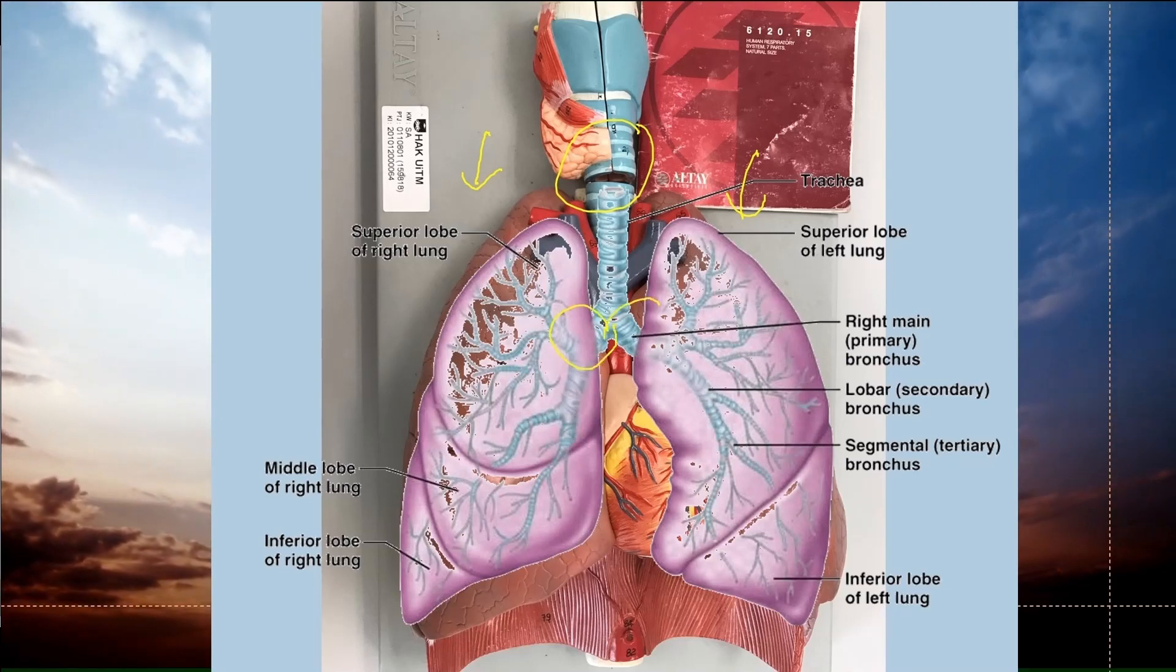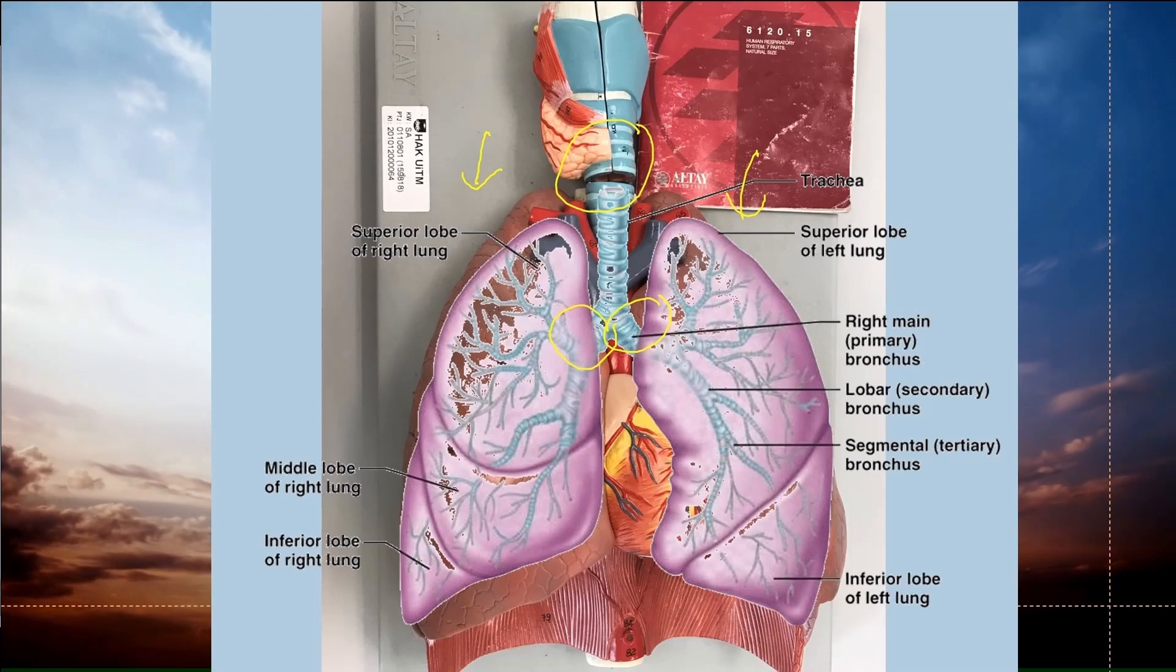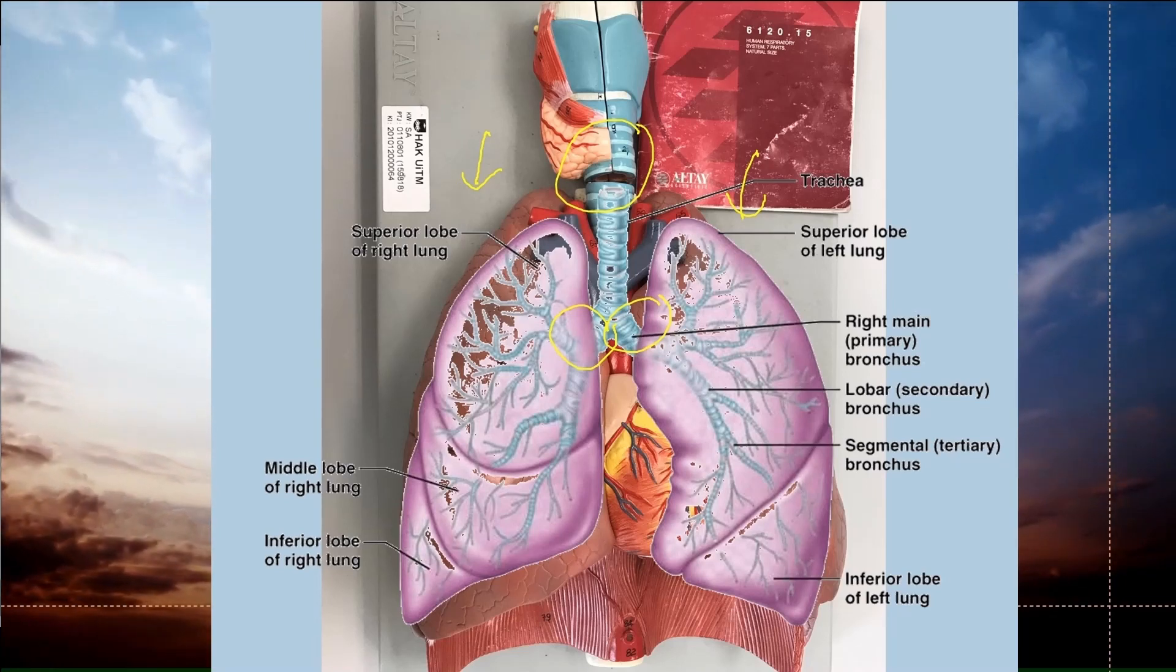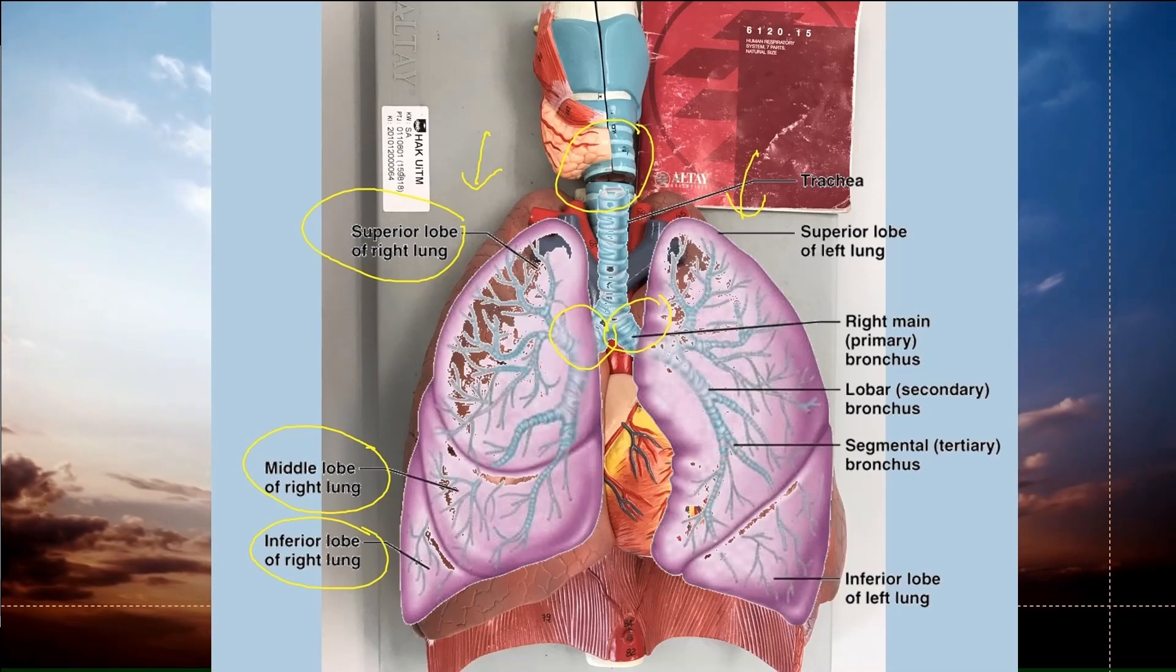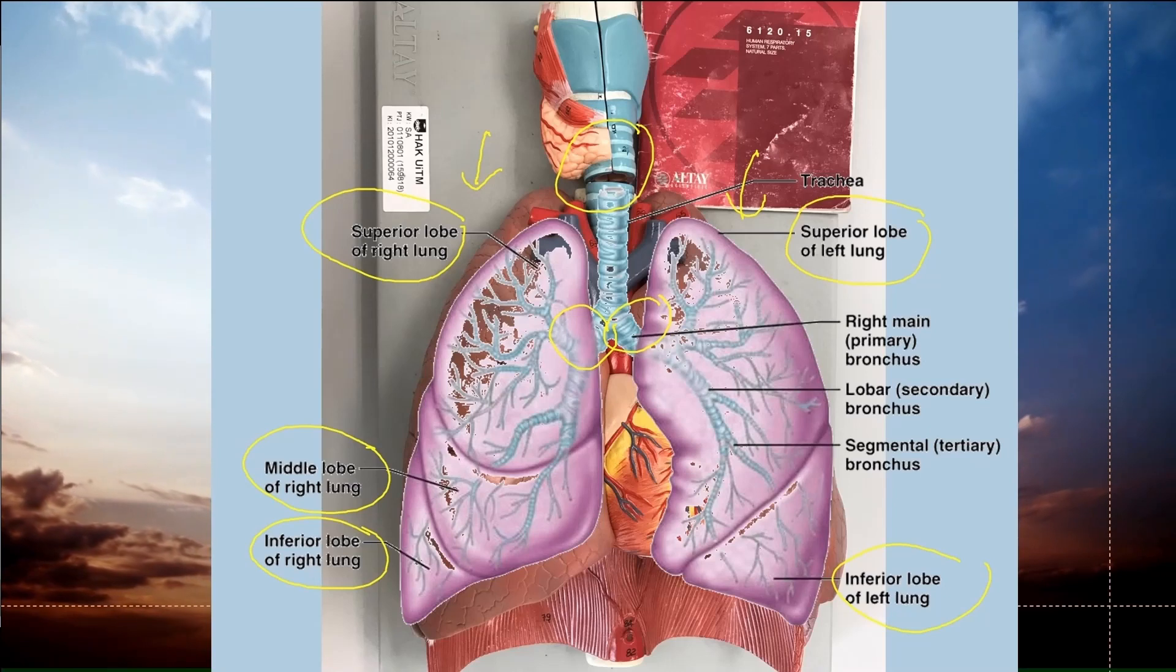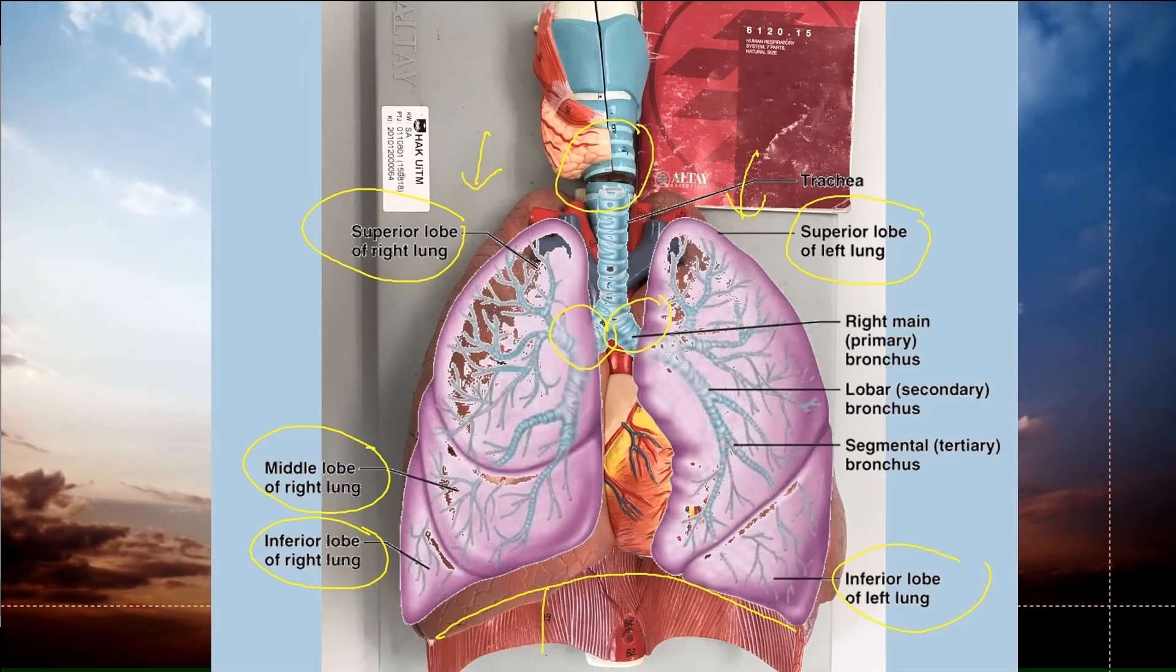Each bronchus branches into smaller bronchioles, and the bronchioles are connected to alveoli. If you look at the right lung, we have three lobes here. The left lung, on the other hand, only has two lobes.